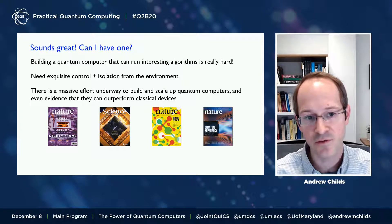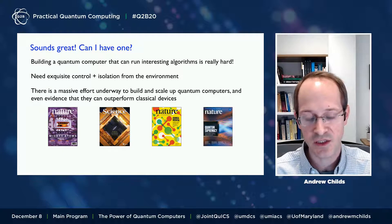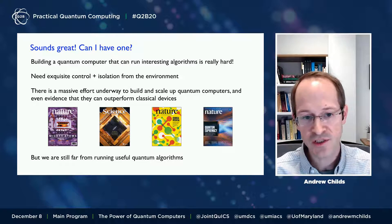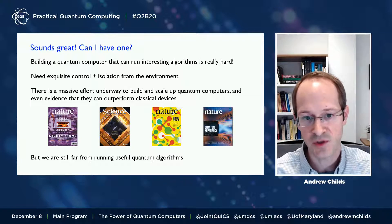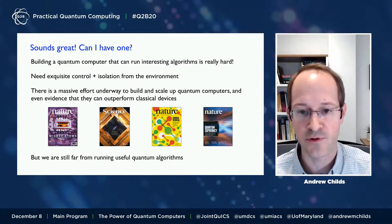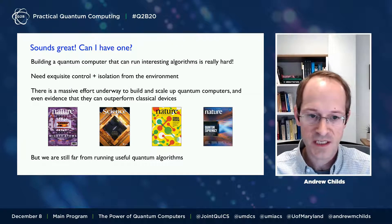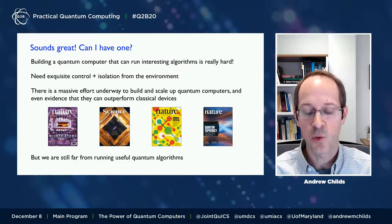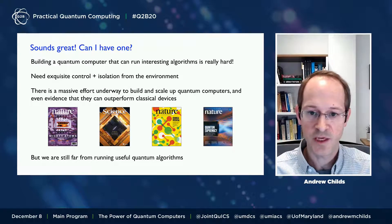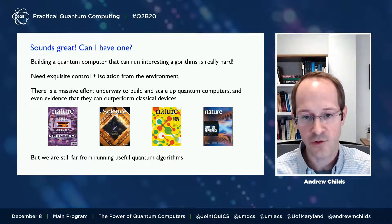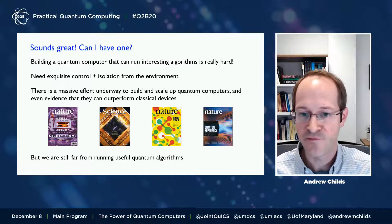There has even been recent evidence showing that quantum devices can actually outperform classical devices, although not in an especially useful task — just one that shows they have, in principle, computational power. But we are still very far from having devices at the scale where we could run useful quantum algorithms and actually apply them to solve interesting problems. What I'd like to talk about today is what we know about what quantum computers are able to do, because we understand the mathematical model of quantum computers very well.